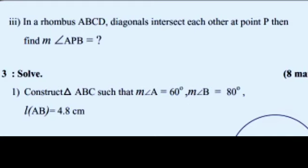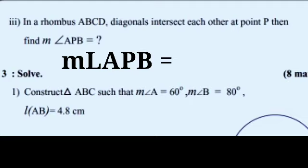Third question: in a rhombus ABCD, diagonals intersect each other at point P. Then find the measure of angle APB. In this rhombus, the measure of angle APB is 90 degrees. You can draw a rough diagram to solve this question, but in your answer paper write only: measure of angle APB is equal to 90 degrees, because this is a one-mark question.